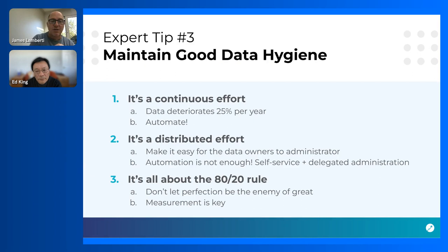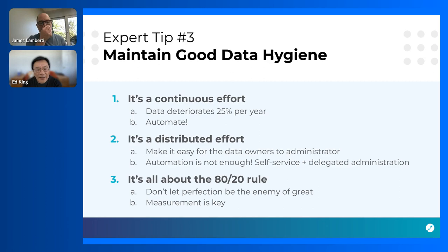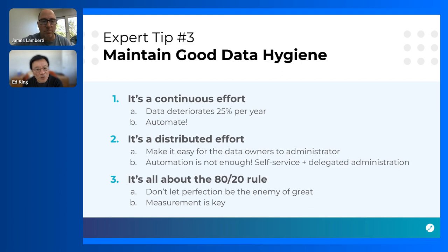Three things about maintaining good data hygiene that may not be obvious. First: it is a continuous effort. Data deteriorates 25% per year — it's like cabbage. If you don't keep it up, all the effort you put in initially has to be repeated over and over, which is very expensive. You absolutely need to deploy automation around data hygiene.